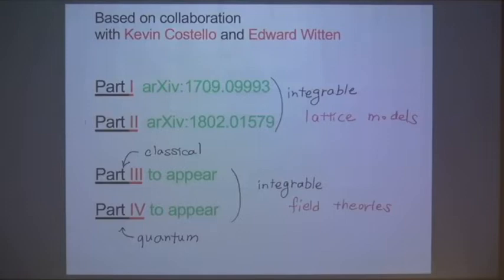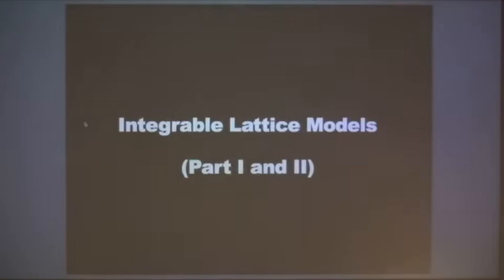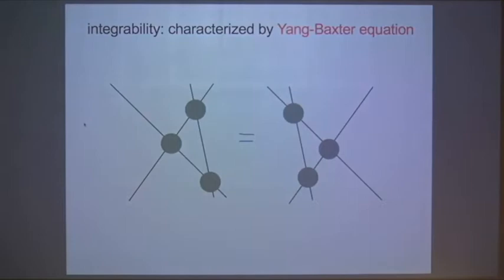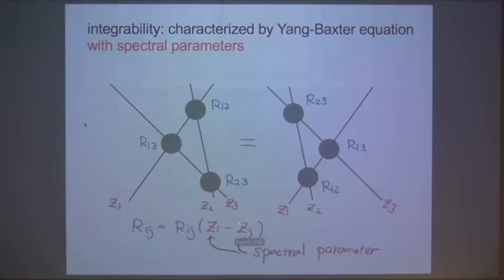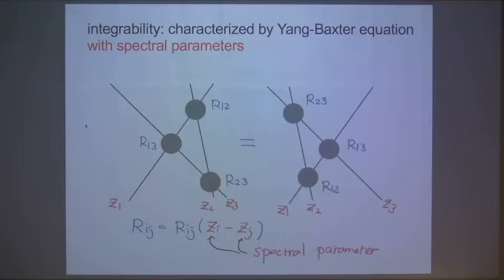Let me begin with the description of the integrable lattice model in our framework. In integrable lattice models, a useful characterization of integrability is the Yang-Baxter equation. The Yang-Baxter equation says that the product of R matrices — denoted Rij — taken in different orders are the same. In integrable models, we need an extra ingredient: the spectral parameter. These spectral parameters, z1, z2, z3, are associated with lines, and R matrices depend on the difference of these spectral parameters. If you can solve the Yang-Baxter equation with the spectral parameter included, that ensures infinitely many commuting conserved charges, and hence the theory is integrable.